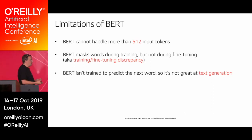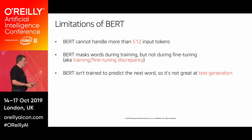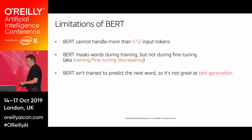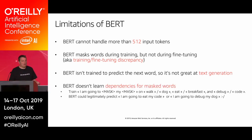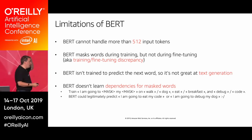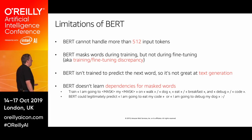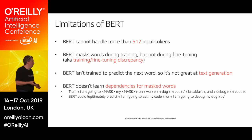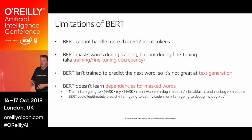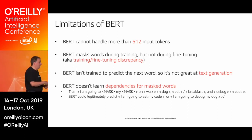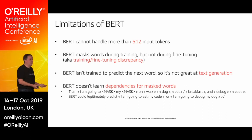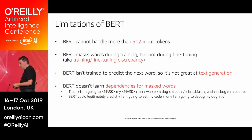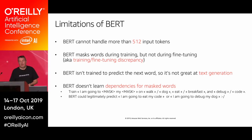BERT, or at least the pre-trained versions, is not trained to predict the next word, so text generation is not a task it excels at. It also doesn't learn dependencies between masked words — so if you mask 'I'm going to ___ my dog,' it could legitimately predict 'debug my dog' or 'eat my code.' The sentence might be grammatically correct but semantically wrong. Still, this is a great advance.